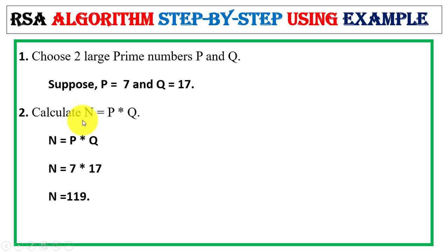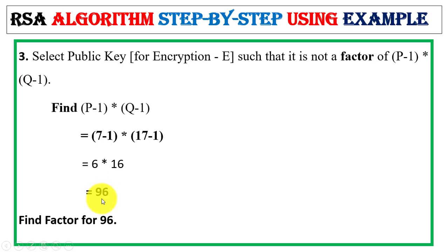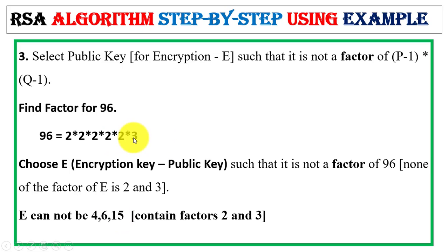For example, take two prime numbers p equals 7 and q equals 17. Step 2: compute n equals p times q, so 7 times 17 equals 119. Step 3: select the public key for encryption using the equation (p-1)(q-1). Substituting p equals 7 and q equals 17, we get (6)(16) equals 96. We then find the factors of 96 to select a valid public key e.